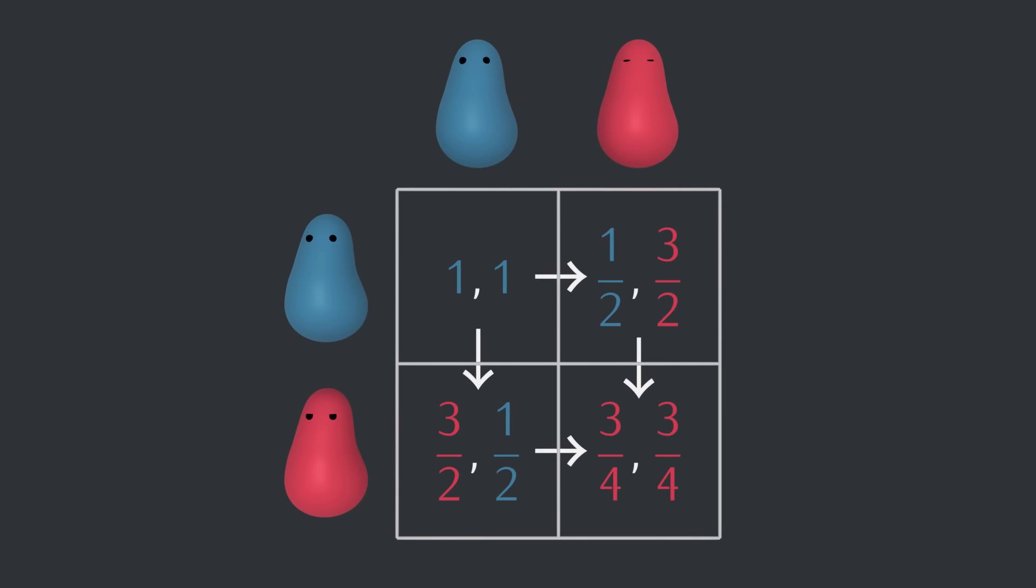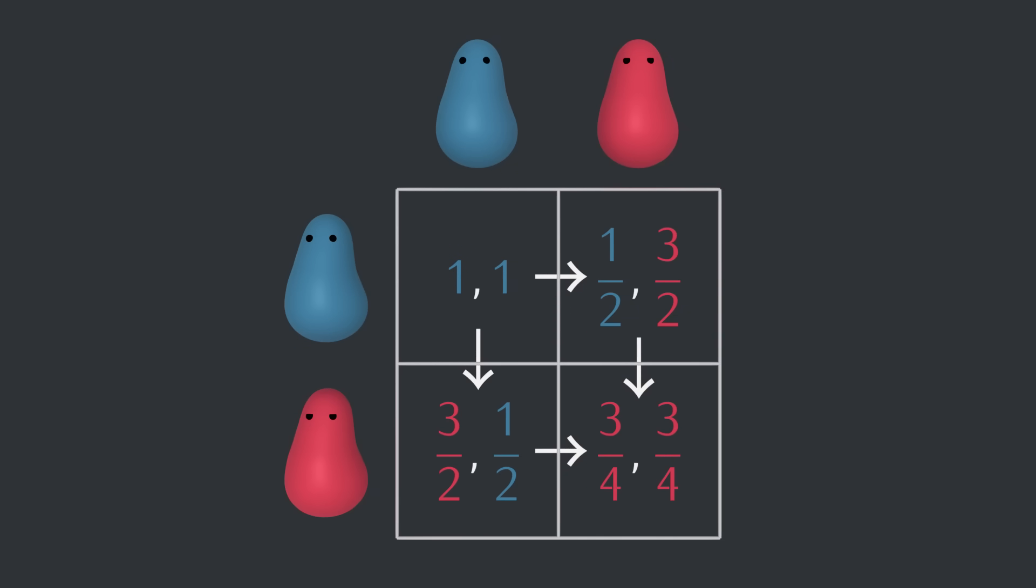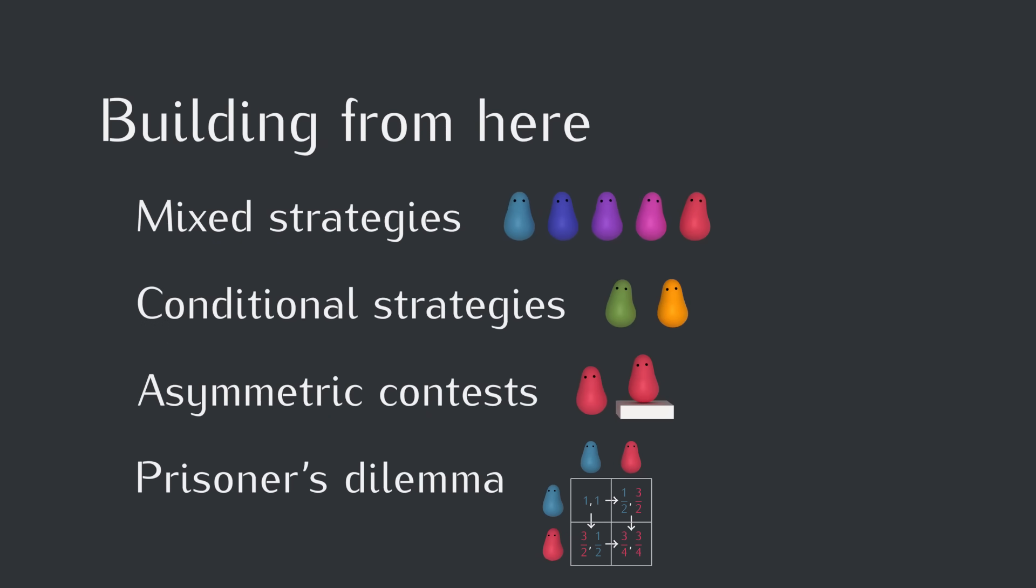We end up in this tragic situation where everyone's fighting all the time, even though they would do better if they could just cooperate. This kind of situation has a special name. It's called the Prisoner's Dilemma. It can feel kind of grim, but there are ways out of it, which we'll talk about in future videos. And I'll see you then.